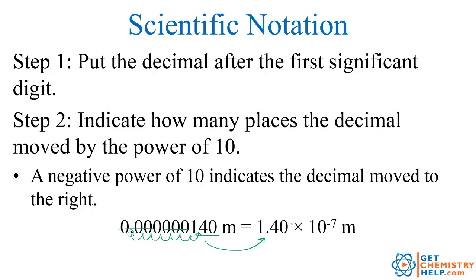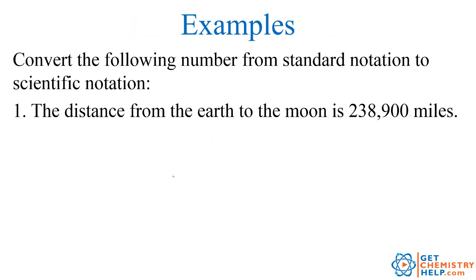If you were to take 1.40 and basically divide it by 10 seven times, this negative means you're dividing it. If you were to divide it by 10 seven times, you would get 0.000000140. Okay, so let's try a few examples here.